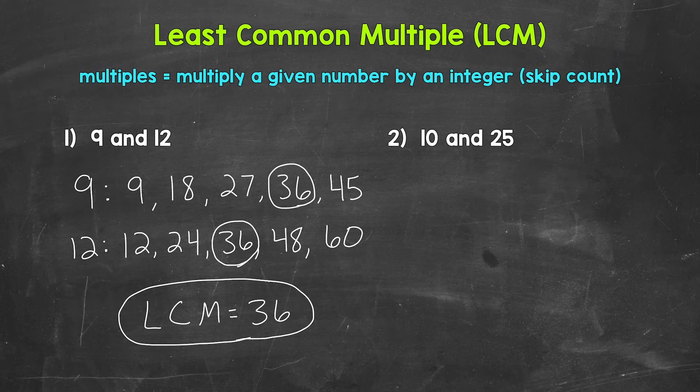One thing to mention about common multiples is that they are infinite. Although we only have one common multiple in our lists, which is 36, we can always extend the multiples lists to find more common multiples. Remember, multiples are endless, so common multiples are endless too.